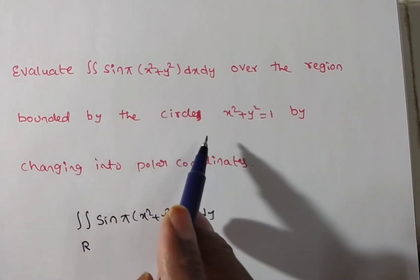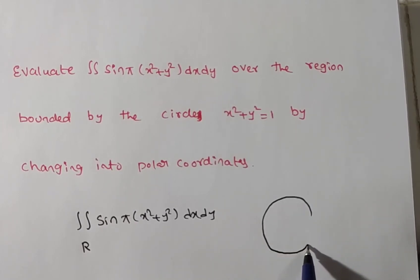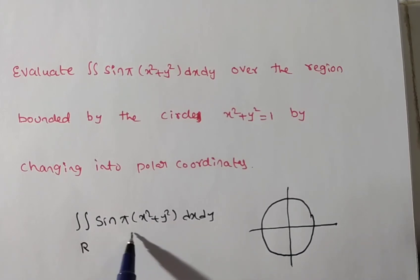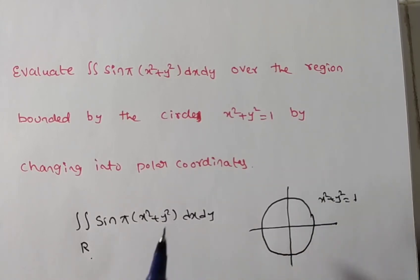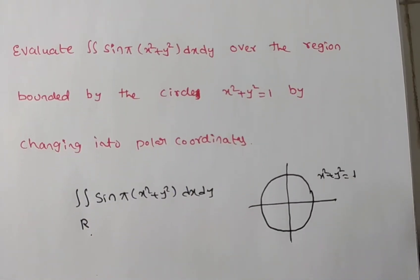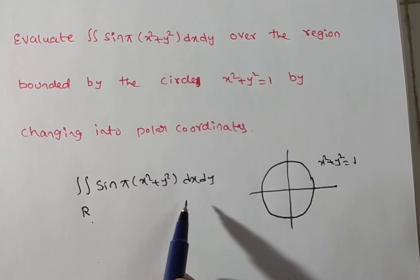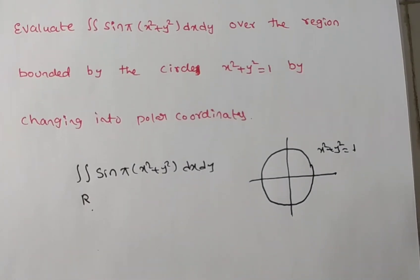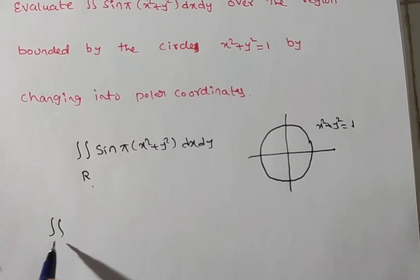The region is bounded by the circle x² + y² = 1, which is nothing but a unit circle. We have to evaluate the given integral in this region. The region is given in x and y terms, so this is in Cartesian coordinates. We need to change from Cartesian coordinates to polar coordinates.